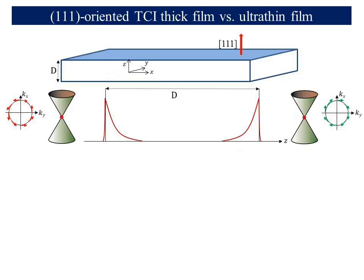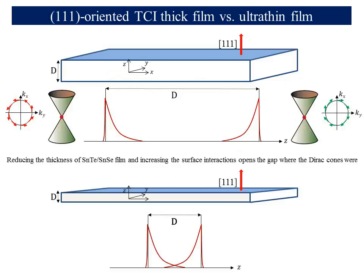A 111-oriented thick film of such a material exhibits two Dirac-like surface states on either side. When the thickness of the film decreases, the wave functions of the top and bottom surface states start to hybridize. This interaction opens the gap in the Dirac cones.